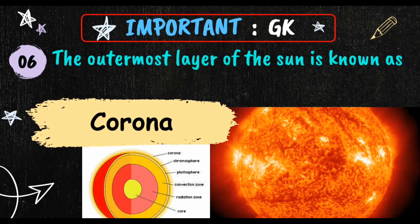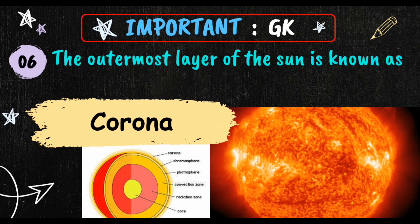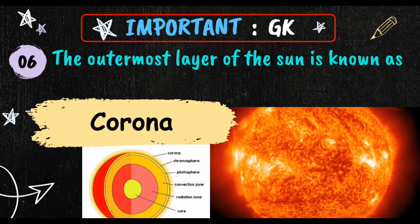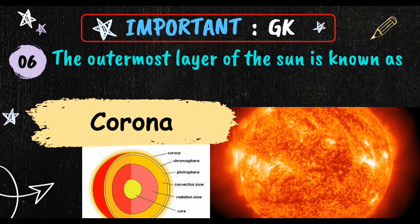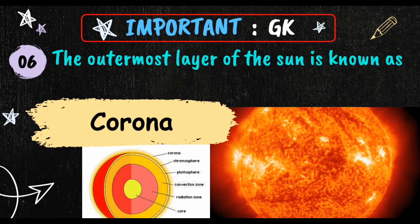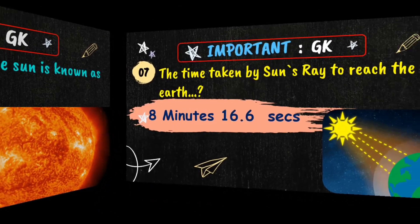The outermost layer of the sun is known as corona. There are totally six layers: corona, chromosphere, photosphere, convection zone, radiation zone, and core.